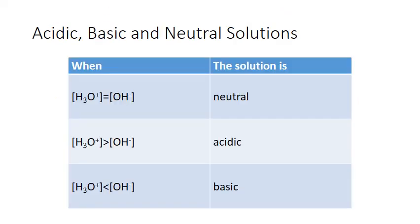When we talk about acidic, basic, and neutral solutions, we're really talking about the relative concentrations of hydronium and hydroxide ions. When the two concentrations are equal, the solution is neutral. When hydronium concentration is greater than hydroxide, it's acidic. And when hydroxide concentration is greater than hydronium, the solution is considered basic.